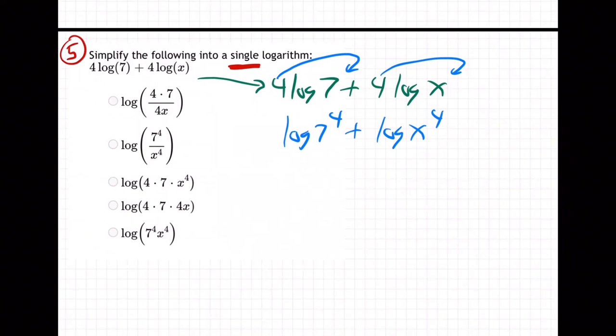Now, next, what is this adding going to become? Adding is going to, for two logs, adding becomes one log multiplication. There's one single log, seven to the fourth times X to the fourth. Does that make sense?